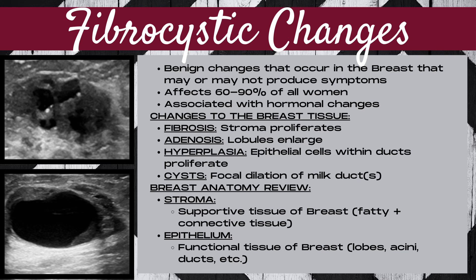Generally, with fibrocystic changes you have multiple cysts of varying size throughout the breast tissue. There are two basic categories of breast anatomy: number one is stroma — the supportive tissue including fatty and connective tissue — and number two is epithelium, the functional tissue of the breast, including lobes, lobules, acini, milk ducts, etc.